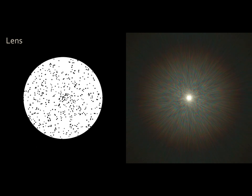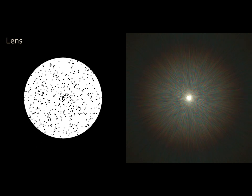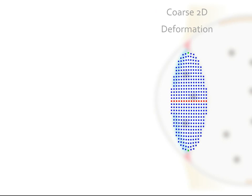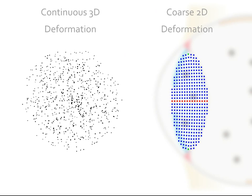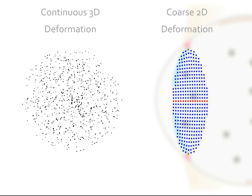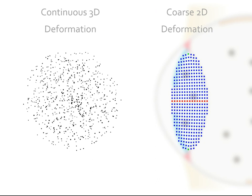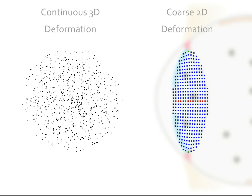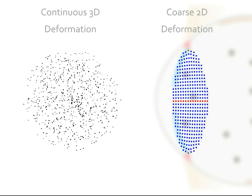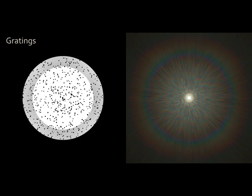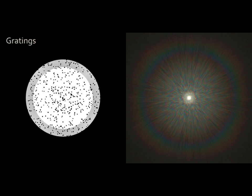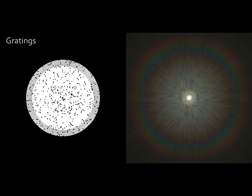We embed the lens particles into a real-time mass-spring simulation of the deforming crystalline lens. Here, a muscle acts on the green simulation node seen at right, giving rise to the specific non-linear deformations of the particles seen on the left. Additional fine circular gratings in the lens give rise to the colorful, rainbow-like ring seen here, which is called the lenticular halo.